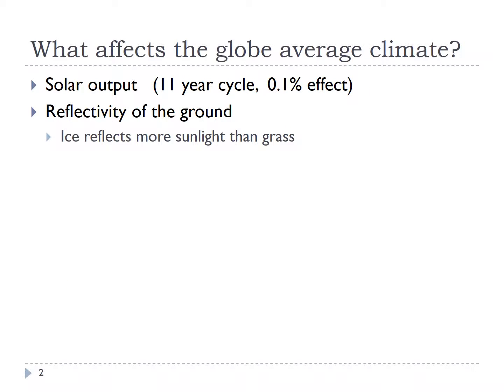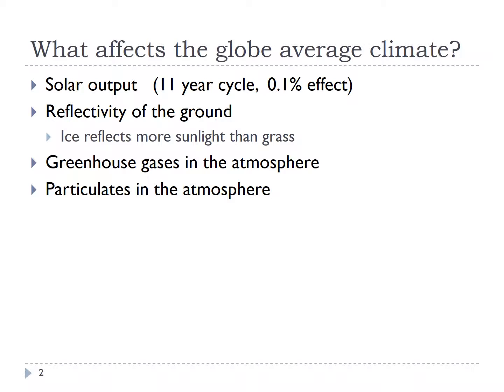I want to give a little background. A lot of things can affect global average climates. Solar output certainly is one of those, and it changes on an 11-year cycle due to sunspots — but as we'll see, it's only about a 0.1% effect. Other factors include changes in the reflectivity of the ground: ice reflects more sunlight than grass. Also, greenhouse gases, particulates, and aerosols from volcanic eruptions can all affect global average climate.